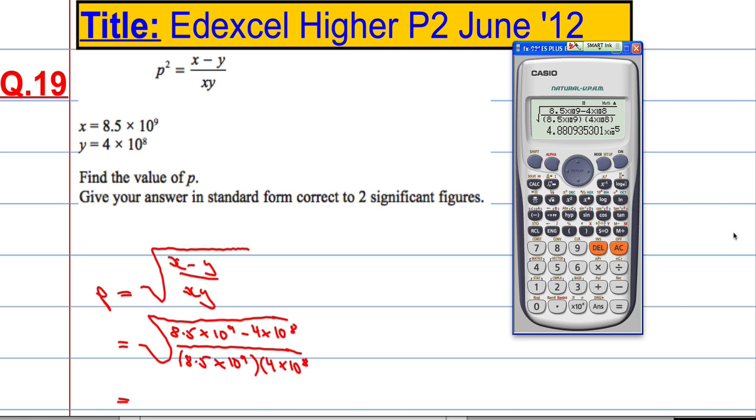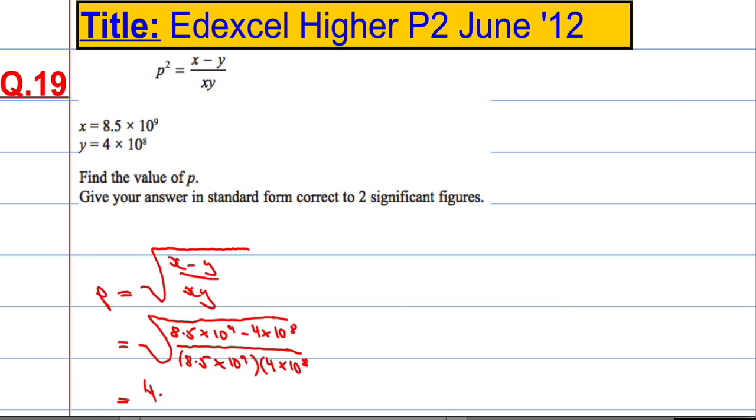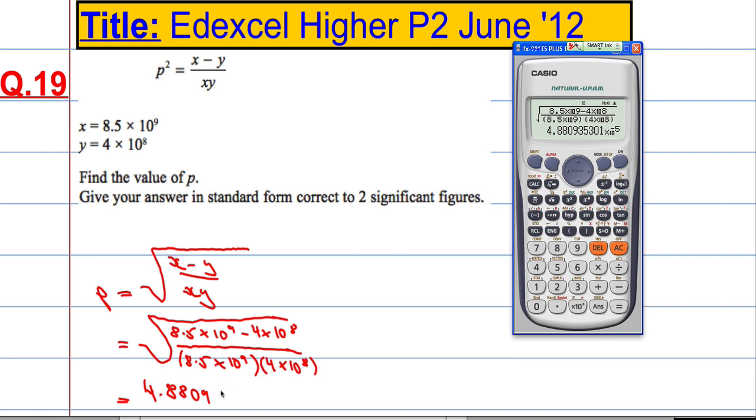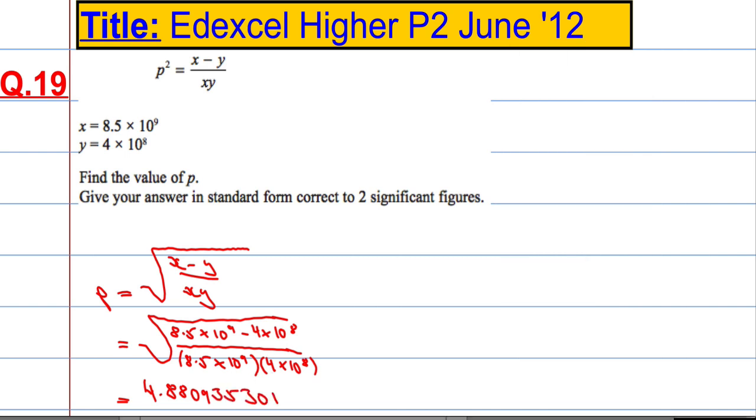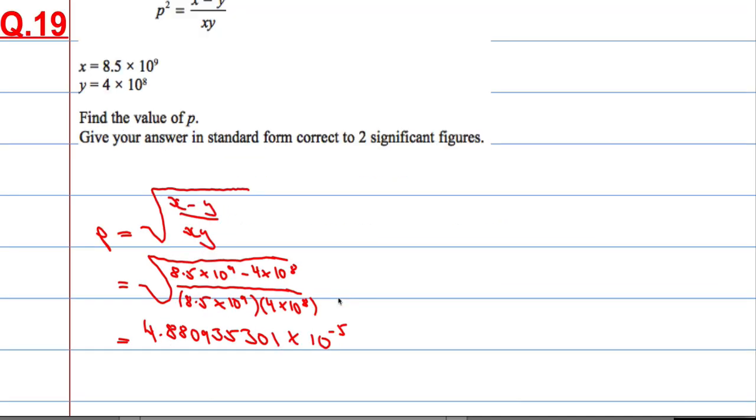4.880935301 by 10 to the power of negative five and two significant figures, so two significant figures one two is going to give me 4.9 by 10 to the power of minus 5.